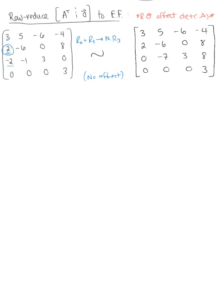Row 2 has a common factor of 2, so we multiply row 2 by one half. Since we are scaling by a factor of one half, we must multiply the matrix by 2 to compensate. This leaves us with row 1: 3, 5, negative 6, negative 4; row 2 becomes 1, negative 3, 0, 4; row 3 is still 0, negative 7, 3, 8; and row 4 is still 0, 0, 0, 3.